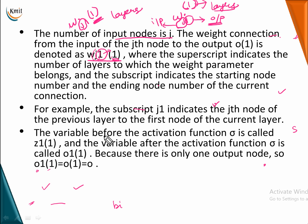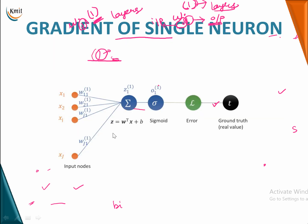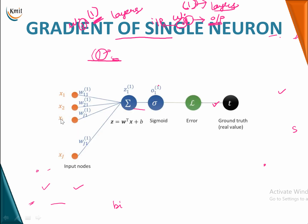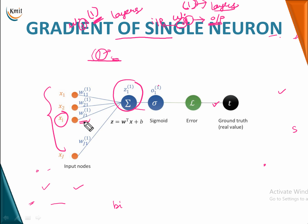The variable before the activation function sigma is called Z. As you can see in the diagram, there are many inputs coming in. For the Jth node you have weight WJ1, from the first node W11, from the second node W21, and so on up to capital J inputs. Finally, you create an intermediate variable Z which gives you the linear relationship.